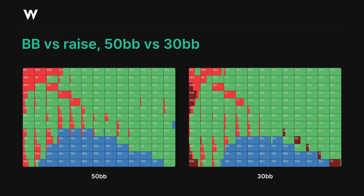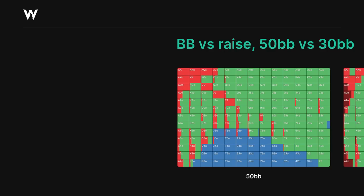As before, our 3-bet bluffs are coming from the offsuit region — so this is very consistent across stack sizes. We're not 3-bet bluffing with suited hands here. In particular, the high card low card combos are our best candidates, since they block some raise calls and unblock a lot of raise folds, while our calling range is actually a little wider than it was before since the raise size is now smaller at 3 big blinds instead of 3.5.